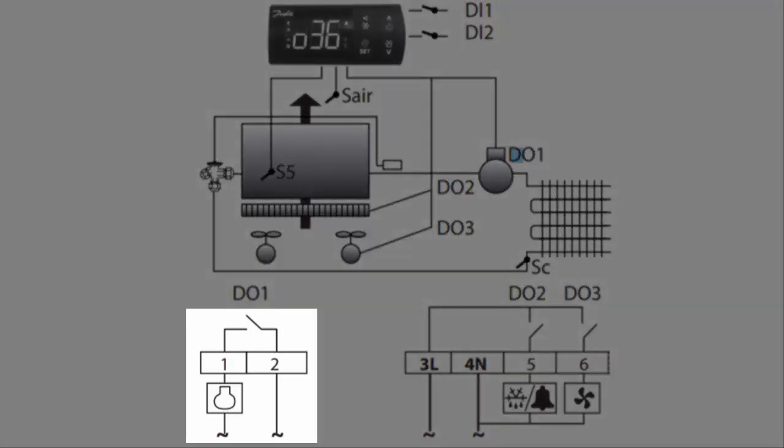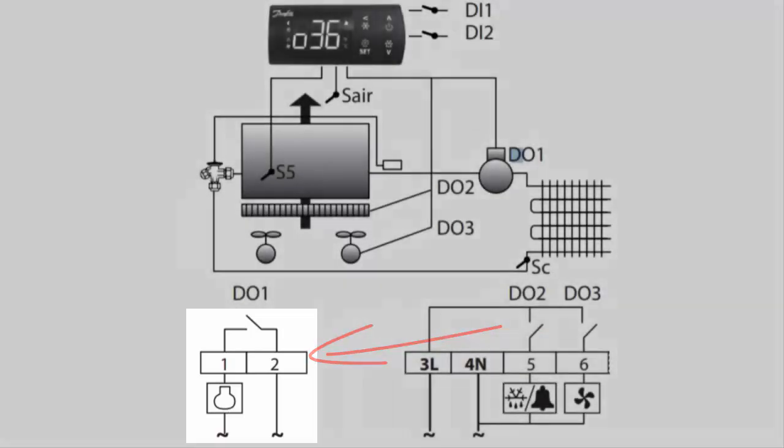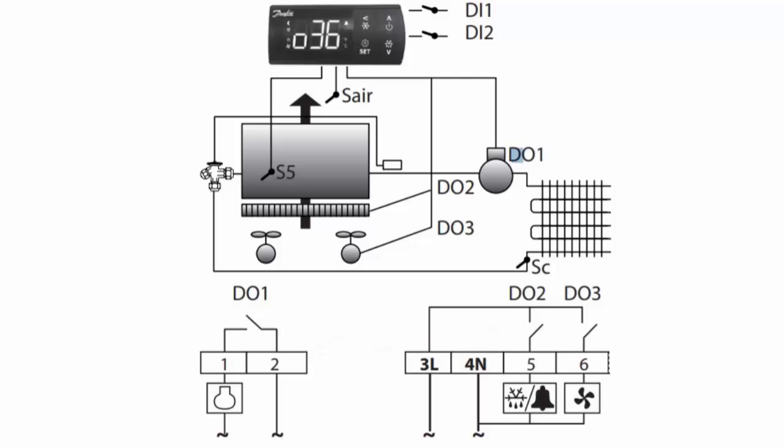This is a dry contact because there's no automatic input on the control for terminals one and two. To power the compressor, you have to apply power - 240 volts or 120 volts depending on the compressor. You apply power to terminal two and it goes out on terminal one, or vice versa. It's dry because it's not taking power intrinsic to the control.